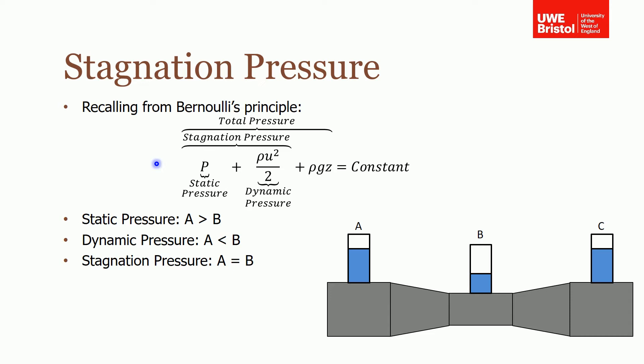If you remember from Bernoulli's principle, you had P plus ρu²/2 plus ρgz equals a constant for any point in your fluid. Each of these terms represents a different pressure. The first term is your static pressure, the second term is the dynamic pressure, and those two combined give you the stagnation pressure. If you add in the pressure due to the potential of the fluid ρgz, that gives you the total pressure.